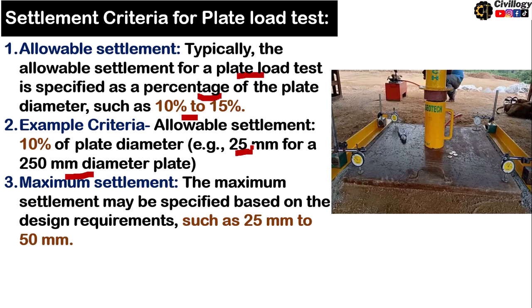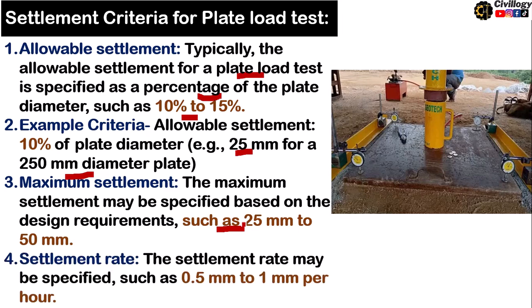The maximum settlement may be specified based on design requirements, such as 25 millimeters to 50 millimeters, which could be project-specific or per ASTM standards. The settlement rate may also be specified, such as 0.5 millimeters to 1 millimeter per hour.